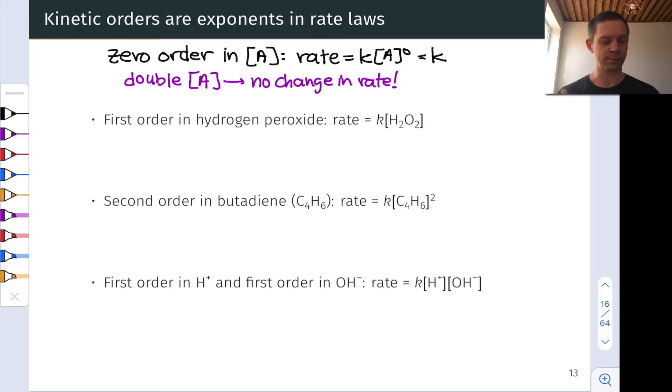Now let's consider a first order reaction. For example, a reaction that is first order in hydrogen peroxide. Well, in that case, the rate equals k times the concentration of H2O2. The exponent on the H2O2 concentration term is one.